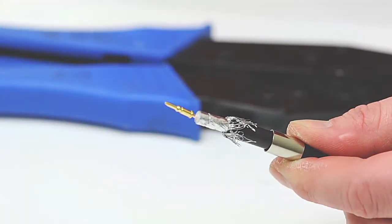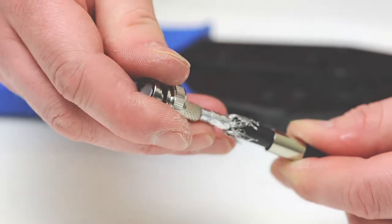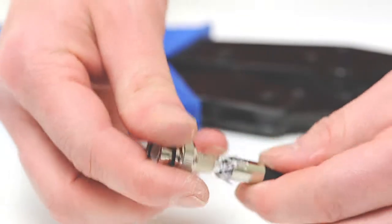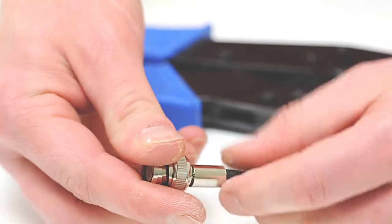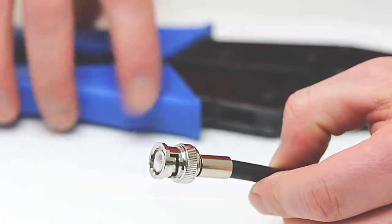Next take the BNC housing and slide it all the way onto the cable. Slide the ferrule back over the jacket making sure it holds the braid onto the connector.